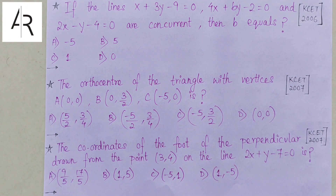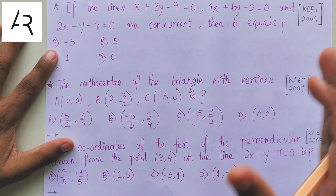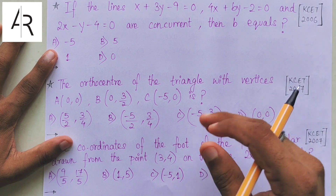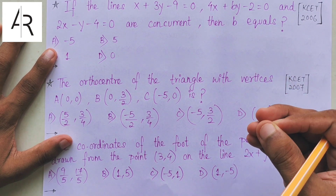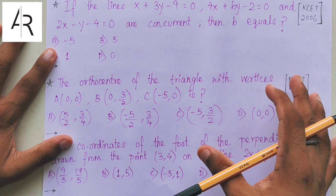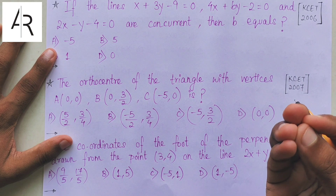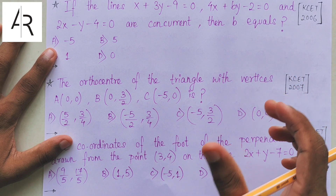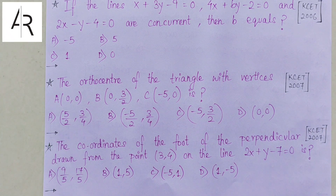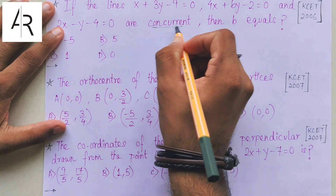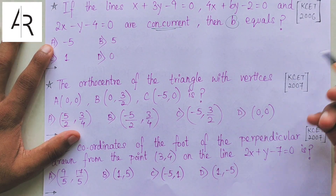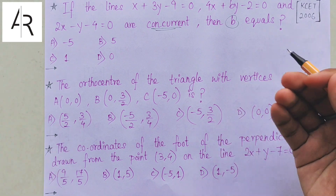I am taking 6 questions from Straight Lines and you will see alternative methods to solve them. You can solve these using the actual orthodox method as well, but in these Tricks and Cheat Codes episodes I am teaching you jugaaru methods. If you are not able to solve a question, instead of leaving it, use these alternate methods to get the answer and improve your score and rank. The first question asks: find the value of B for which these three lines are concurrent.